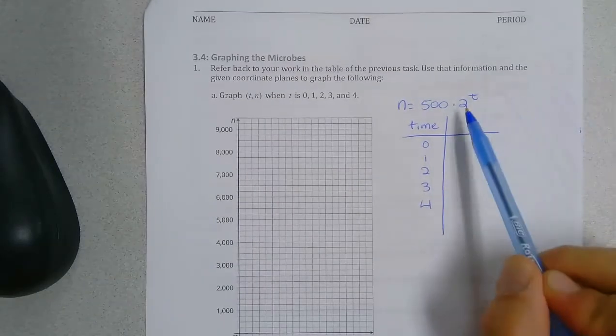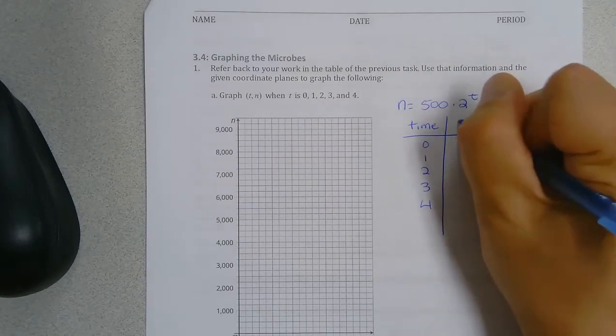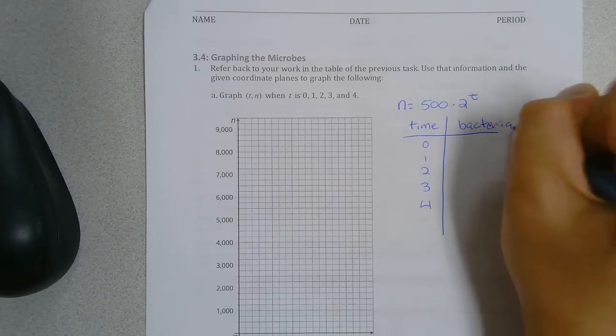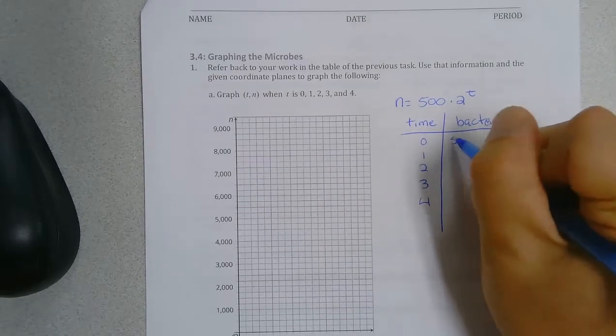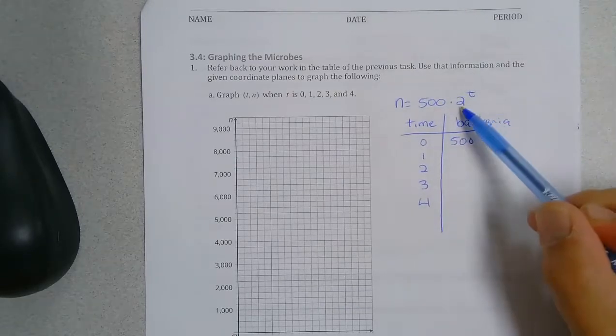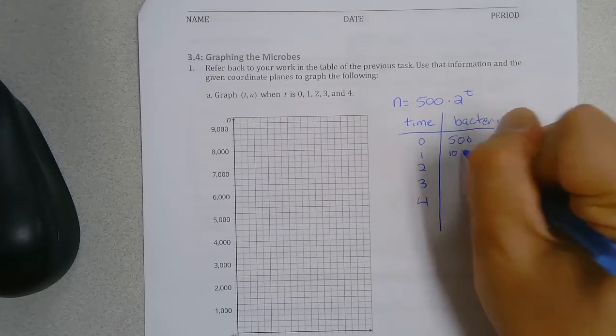And if I put in 2 to the 0, that's 1. So our number of bacteria is 500. And then if we put in 2 to the 1, 500 times 2 is 1,000.